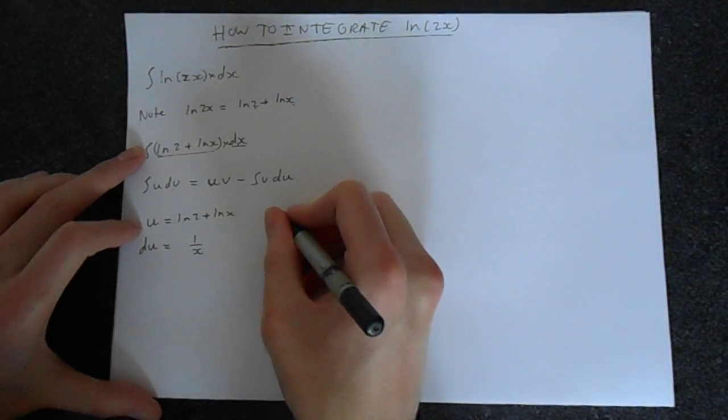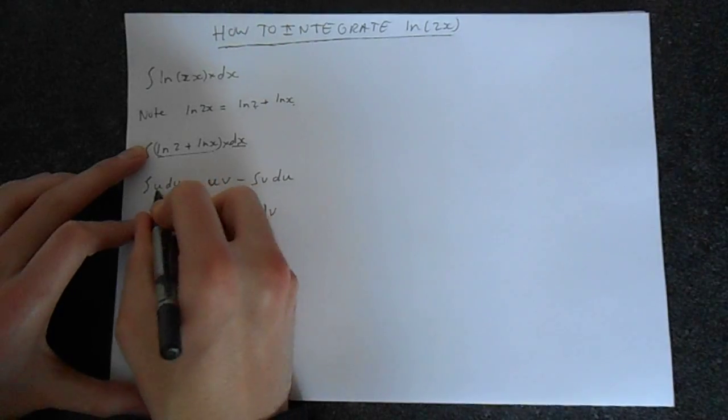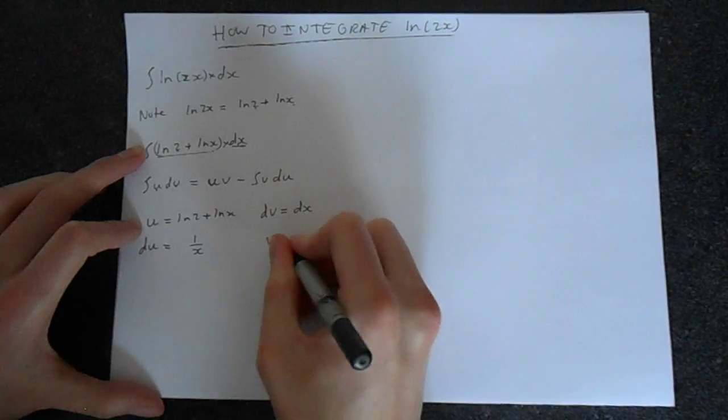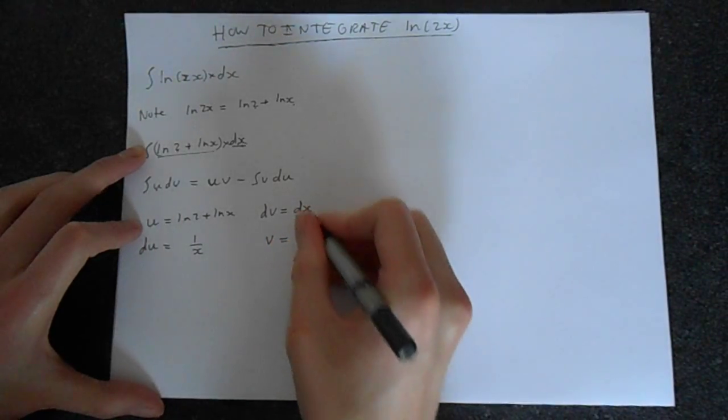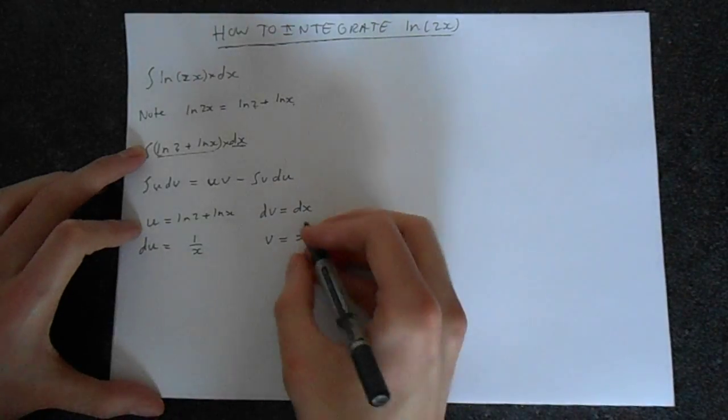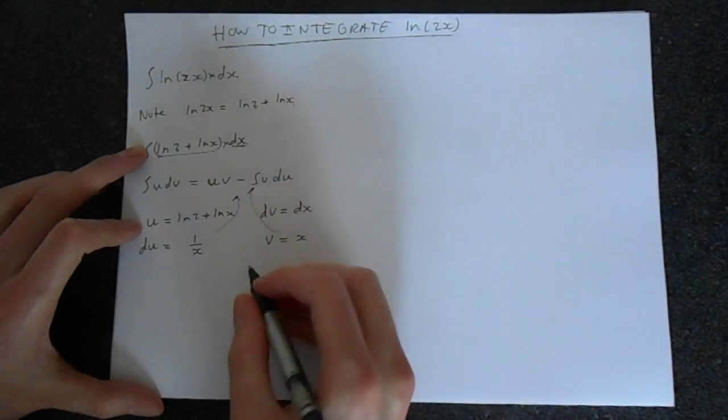And we choose dv. So you've got u is this, dv is this. dv equals dx. We integrate to get v. The integral of dx is, of course, x. So we can substitute all of this into this expression up here.